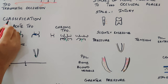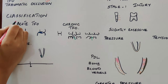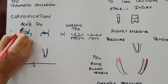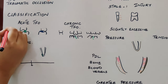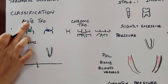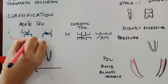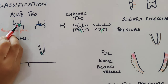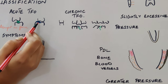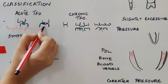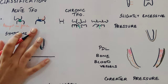Coming to the classification of trauma from occlusion — according to Glickman, it is classified by duration of cause as acute TFO and chronic TFO. Acute TFO happens in cases of any abrupt occlusal force, such as biting on an olive pit, or when a restorative or prosthetic appliance interferes with or alters the direction of the occlusal force.